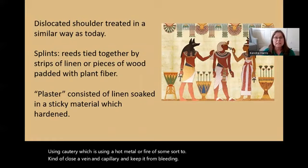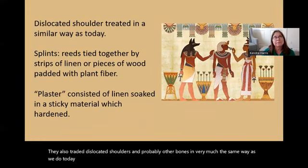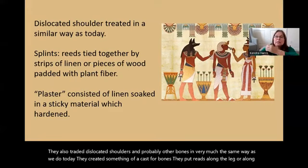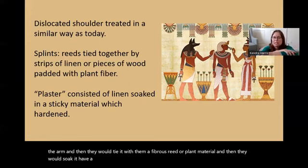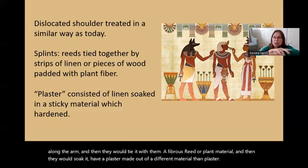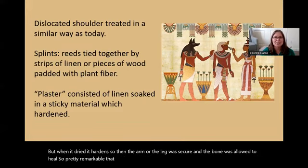They also treated dislocated shoulders and probably other bones in much the same way as we do today. They created something of a cast by placing reeds along the leg or arm, tying it with fibrous reed or plant material, and then applying a plaster that hardened when it dried, securing the limb and allowing the bone to heal. Pretty remarkable that this was 5,000 years ago.